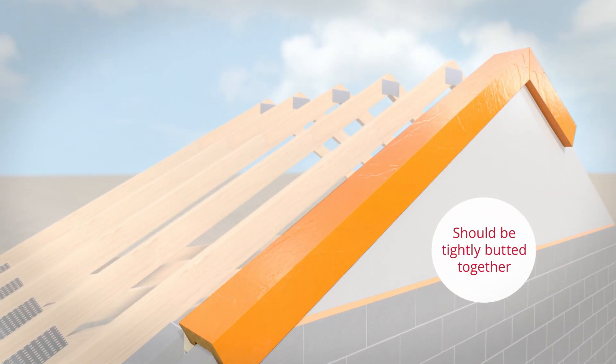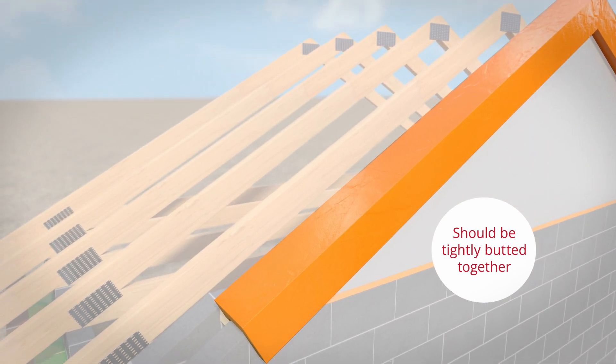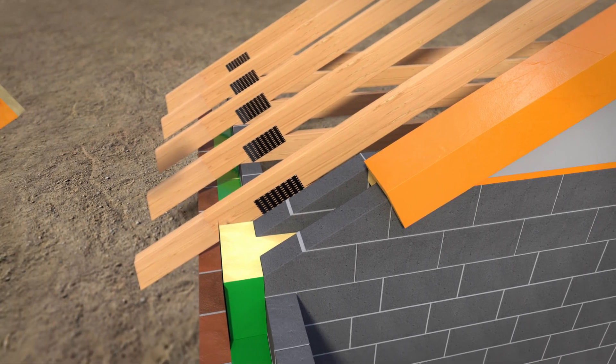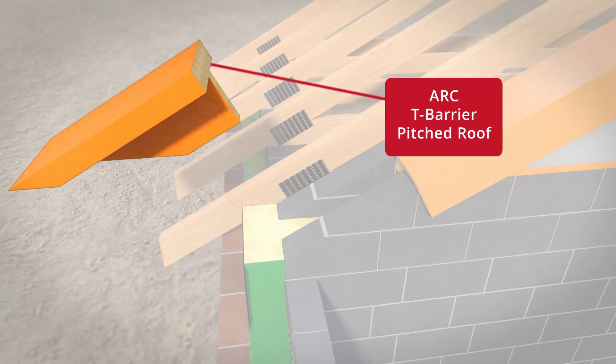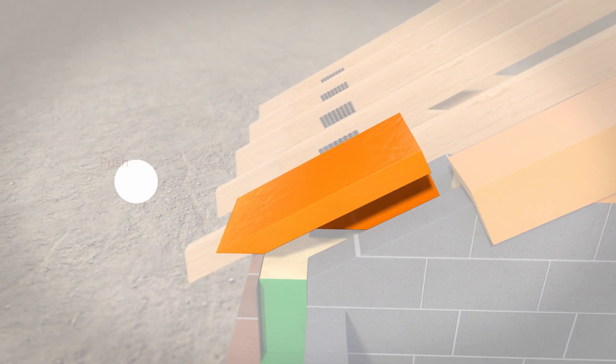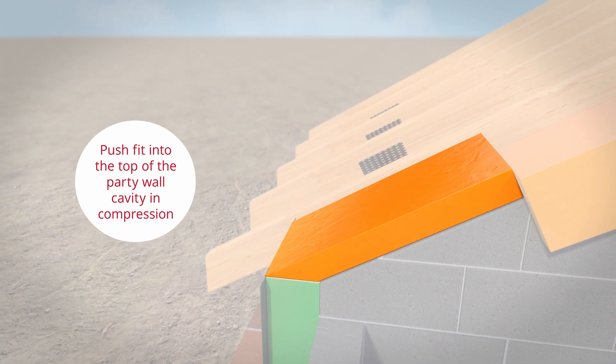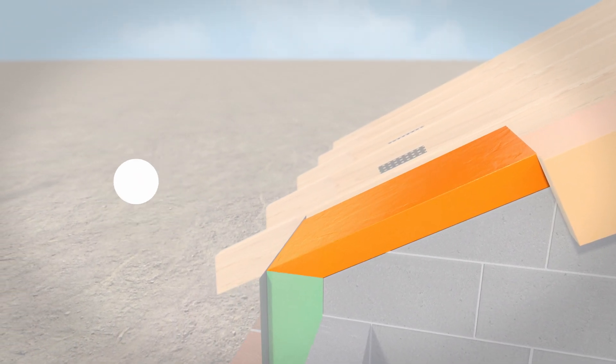The NHBC recommend a 25 mm gap between the top of the spandrel and roof trusses. The Arc T Barrier Pitched Roof provides fire stopping between the party wall and roof covering. It is compression fitted into the top of any stepped blockwork, which is cut to match the pitch of the roof.